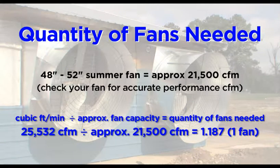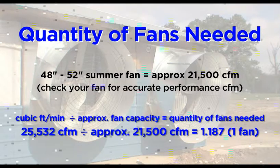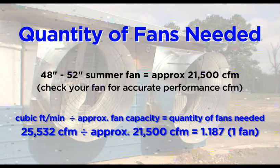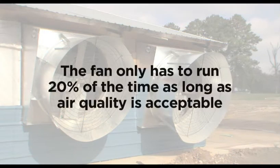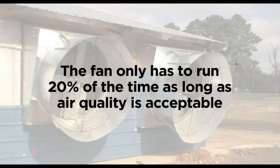Always round up or down to the nearest whole number. In this example, you need to use one summer fan to run on a cycle timer and temperature override. The fan only has to run 20% of the time, as long as the air quality is acceptable.